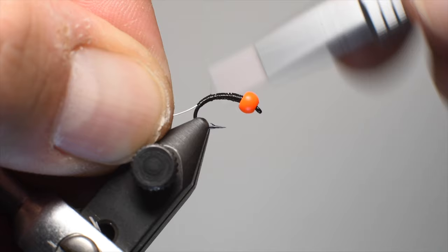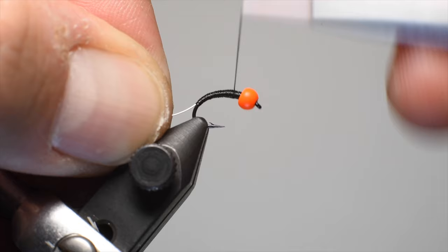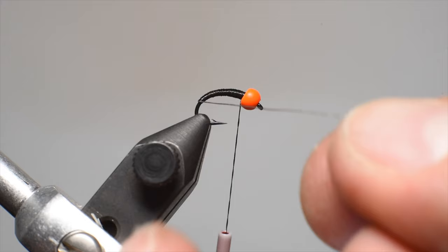The zebra midge is a pattern that's been fished a lot. I think Ted Fauceglia is who is accredited for the pattern, basically mimicking a midge pupa or a chironomid. And so there's a ton of different varieties, but one of the key things is the segmentations.